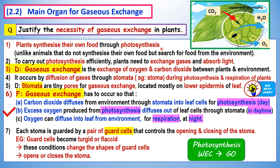In order to carry out photosynthesis efficiently, plants need to exchange gases and absorb light. Looking at the short-form equation for photosynthesis: water plus light energy plus carbon dioxide, with the help of chlorophyll to absorb the light energy, produces glucose and oxygen.